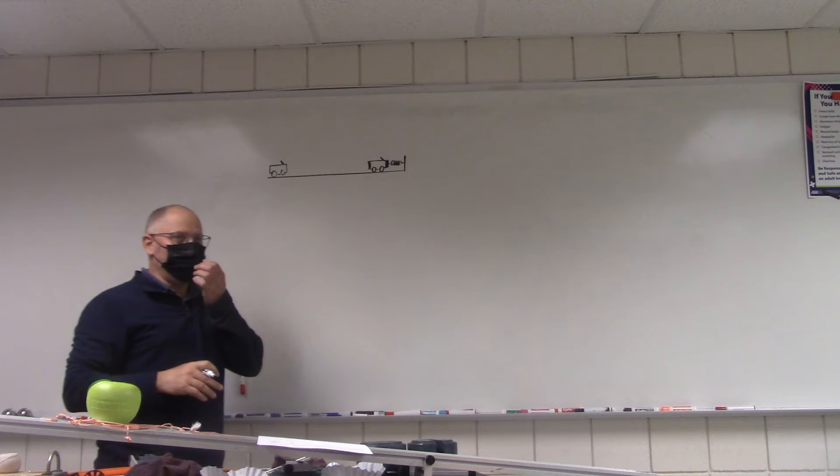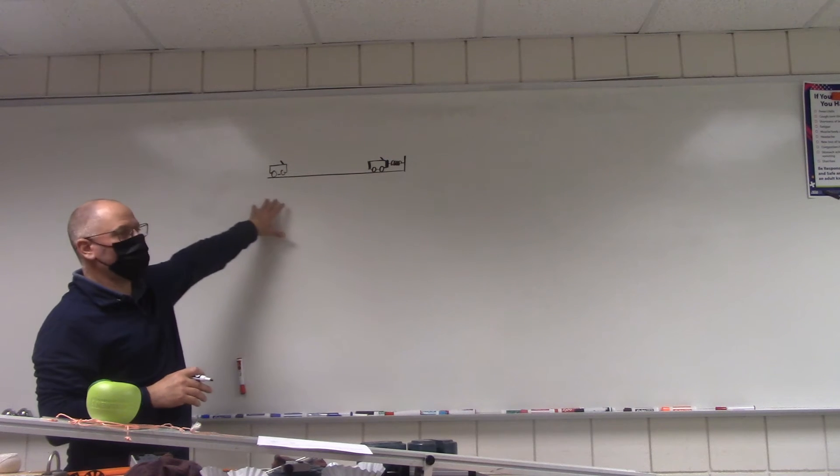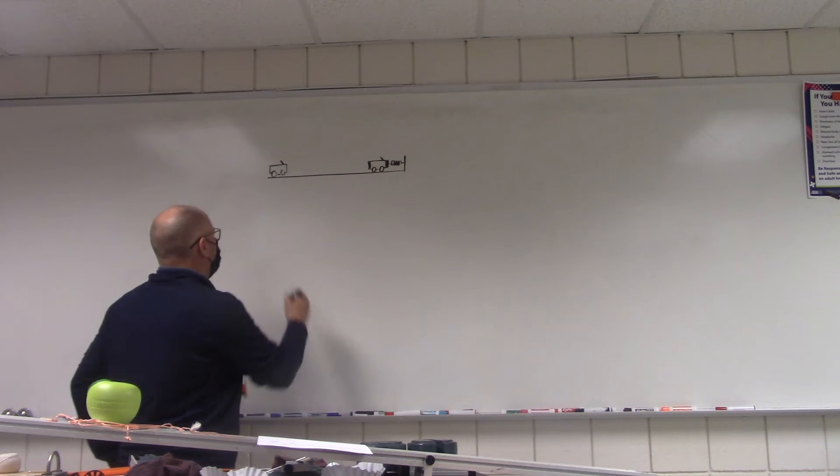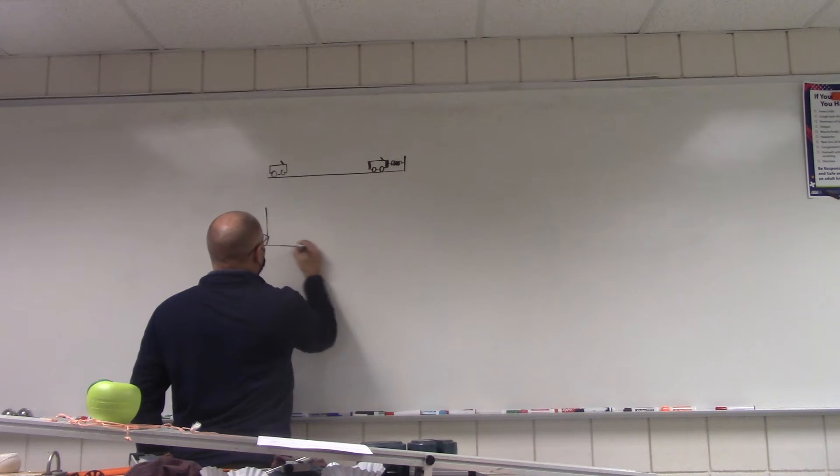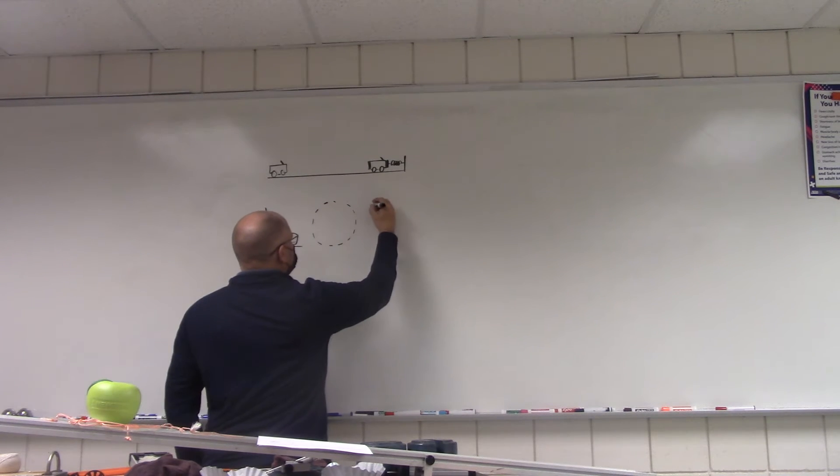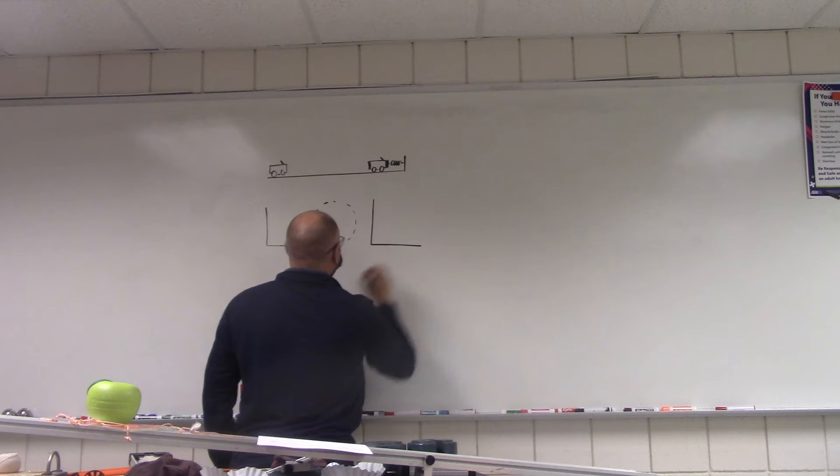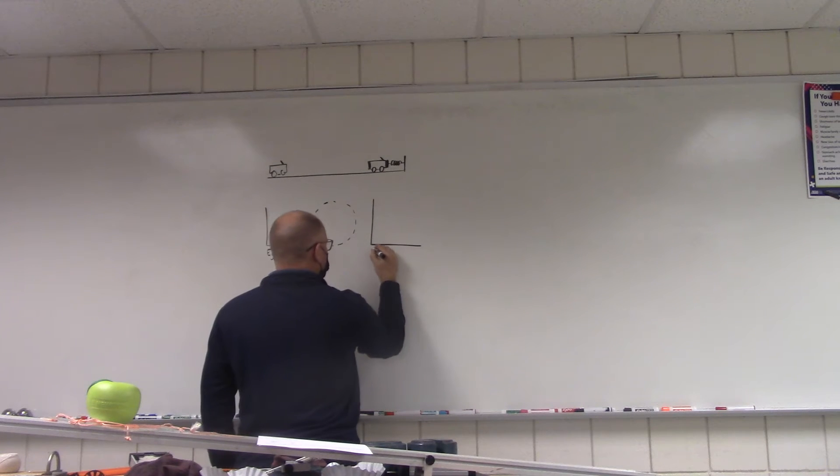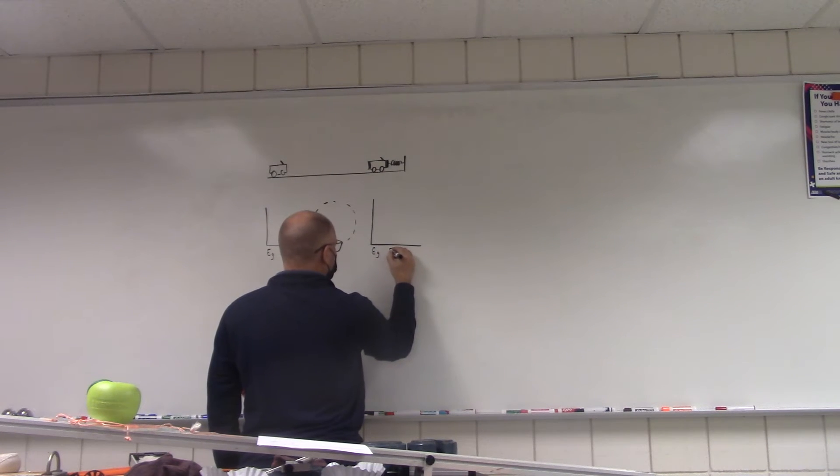What we have is the before and after, so we're going to use the bar chart. Sketch out a bar chart real quick. The bar charts look like this. We have gravitational energy, kinetic energy, and elastic energy. Gravitational energy, kinetic energy, and elastic energy.